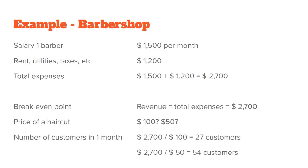If the price of a haircut is $100, we need 27 customers: $2,700 ÷ $100 = 27. On the other hand, if the price is $50, we need double the number — 54 customers — to reach the same total revenue. By knowing the break-even point, it helps you set targets and quickly know if your business is profitable or not.